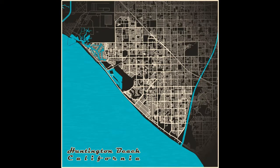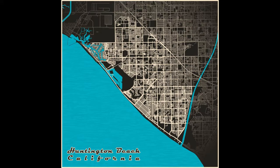Hello, this is Jeff at Magical Fruit Toots. In this Photoshop tutorial we will stylize a map of Huntington Beach, California. For this city we will use a color modified white on black style. I chose this city because it has an ocean coastline.